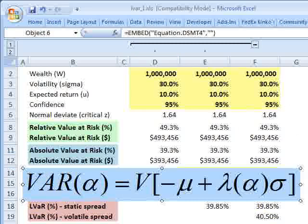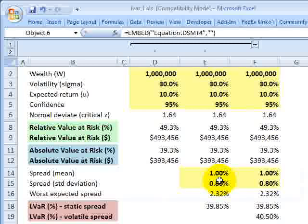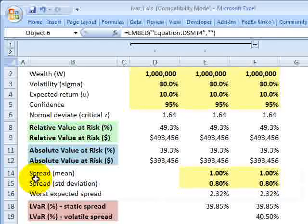And now we can look at the liquidity-adjusted VAR, which wants somehow to incorporate the liquidity of the instrument. It could be of the portfolio as well. One way to do this, per the suggestion by Jorian, is to use the spread on the instrument.